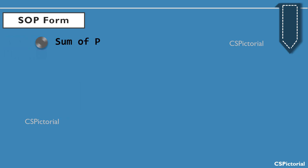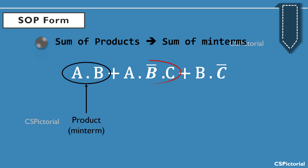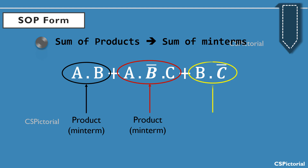SOP stands for sum of products, or sum of min terms. For example, this is a Boolean expression — what you could understand at just the first view is that the expression is summing up or adding up a few product terms. So each term, A·B, is a product term or a min term. A·B̄·C is another product term or min term. Similarly, B·C̄ is another product term or min term. This expression is finally adding up or summing up all the product terms, as the name tells you: sum of products.